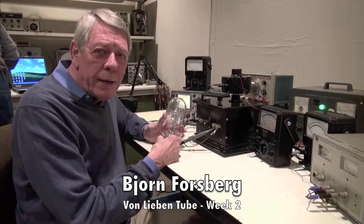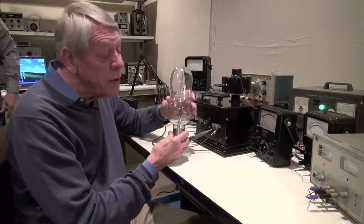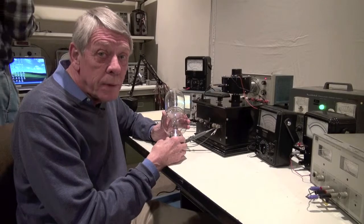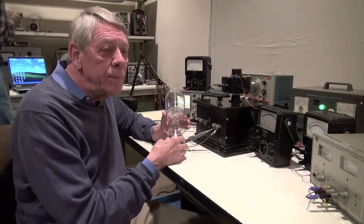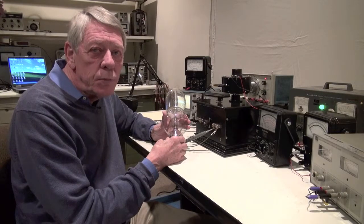And what we're going to do today is to try to see if we can get an old von Lieben tube to work after a hundred years. Von Lieben came from Austria, got a patent in about 1910 for a tube like this.